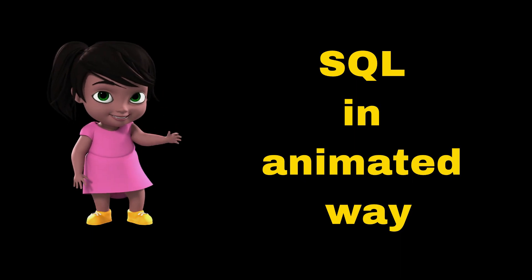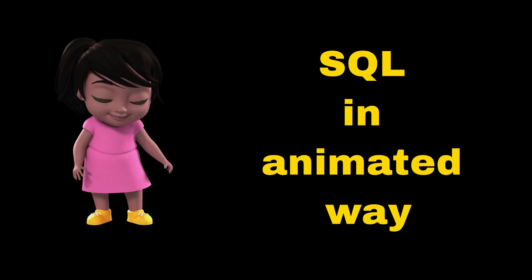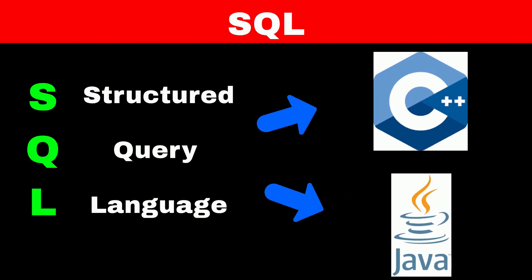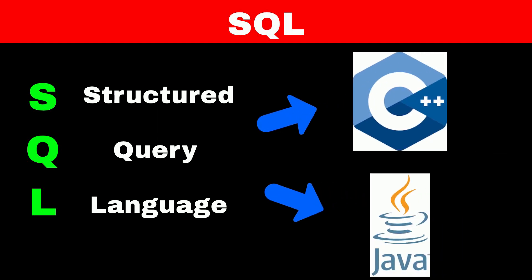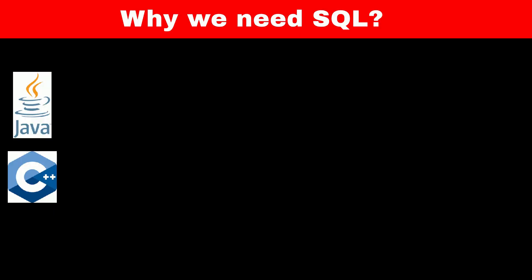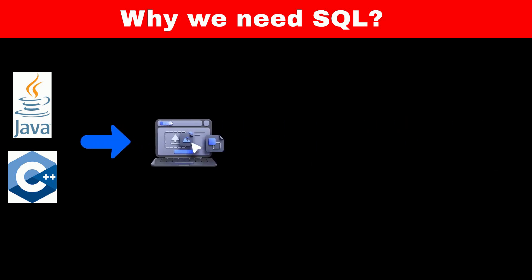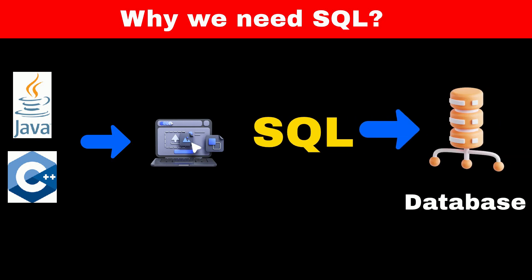What is SQL and why do we need it? SQL stands for Structured Query Language. As the name suggests, it's a language similar to Java and C++. However, Java and C++ are high-level programming languages which are used to communicate with computers, while SQL is a language specifically used to communicate with databases.